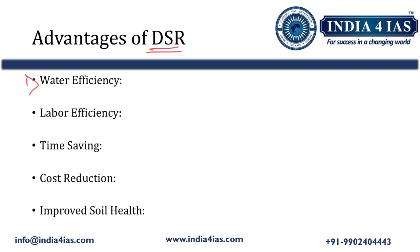The first advantage is water efficiency. Direct seeding of rice reduces water consumption by 30 to 50% compared to traditional transplanting methods, which is crucial for water-scarce regions. The second advantage is labor efficiency. The DSR technique significantly reduces labor requirements compared to conventional transplanting. In conventional transplanting, laborers are required, whereas in DSR the need for labor is eliminated as seed drills are used to sow the seeds.